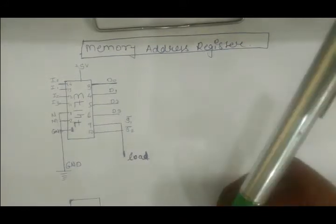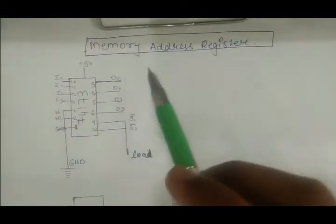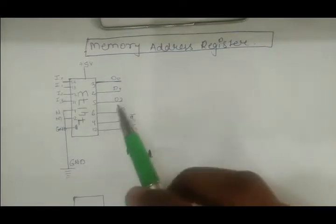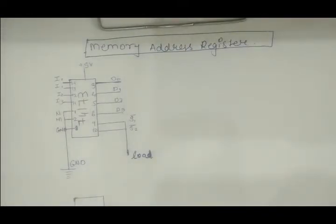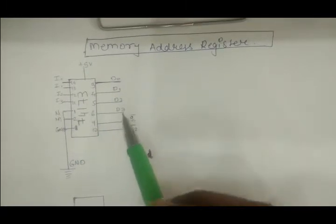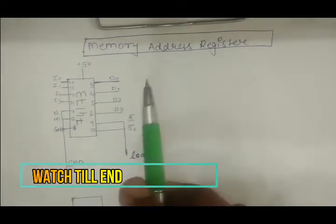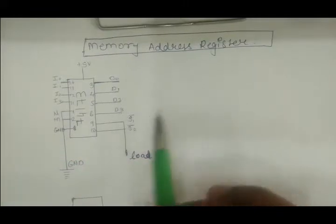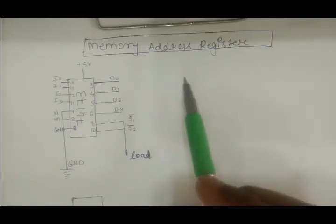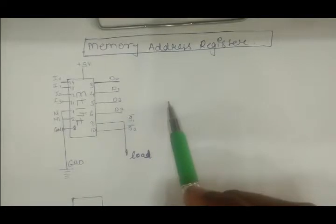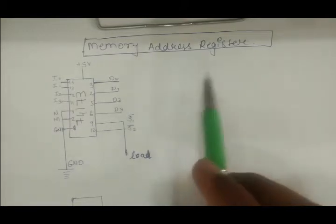The 74173 IC is a D-type 4-bit register. Our memory address register will be a 4-bit address, and it will be addressing the RAM which will be up to 16 bytes. In further upcoming videos we will be discussing this RAM. In the previous video I talked about the program counter, clock module, instruction register, register A, register B, and the arithmetic logic unit.